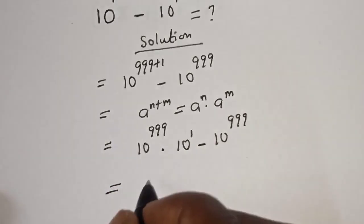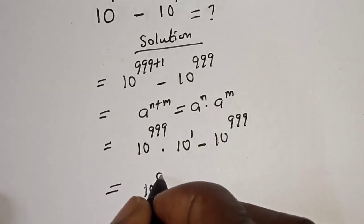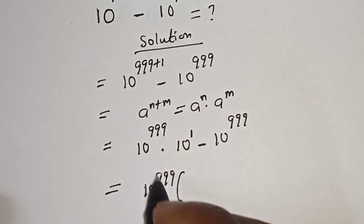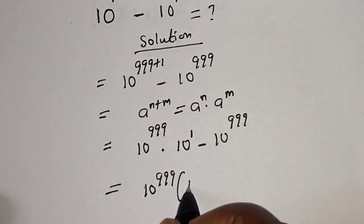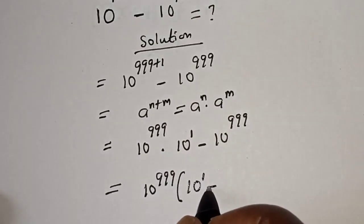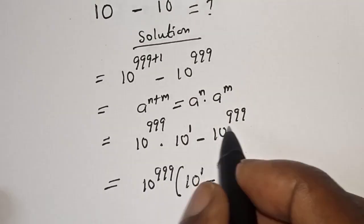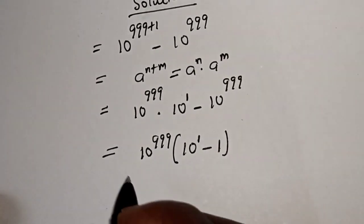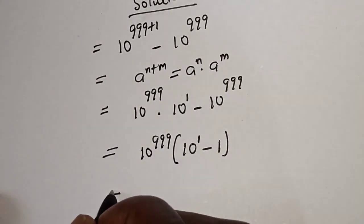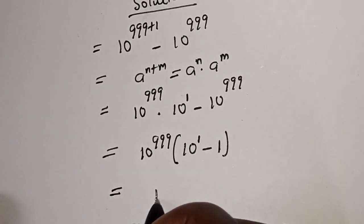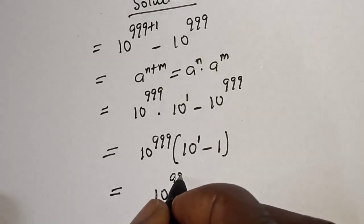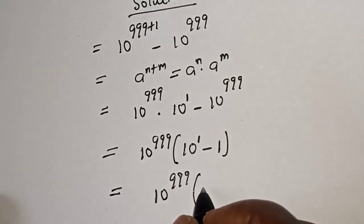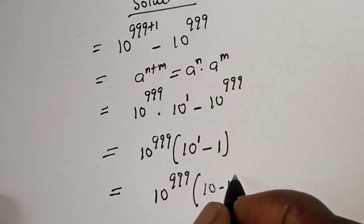This is equal to: 10 raised to power 999 is common, let's bring it out. In brackets, we have 10 raised to power 1 minus 1. This is equal to 10 raised to power 999, bracket, 10 raised to power 1 is 10, minus 1.